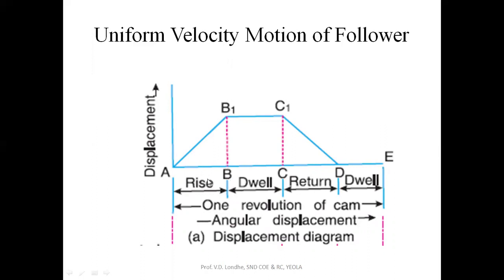The first part is rise — that is the angle of ascent — followed by dwell where the follower remains stationary, then the return part where the follower comes from the high point back to its initial position, and finally a rest dwell. For uniform velocity motion, we divide the angle of rise and angle of return into six or eight equal parts and draw a gradually increasing line for the angle of rise, then stationary at the dwell point, and during return it comes back to its initial position.